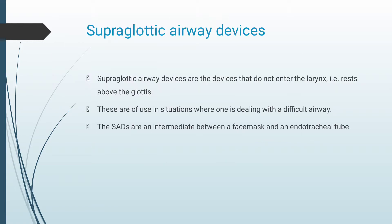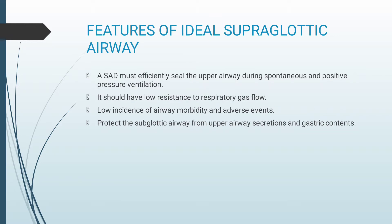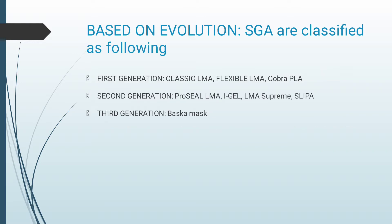Moving on to supraglottic airway devices. Supraglottic airway devices are devices that do not enter the larynx — that is, they rest above the glottis. These are of use in situations where one is dealing with a difficult airway. Supraglottic airway devices are an intermediate between a face mask and an endotracheal tube. A supraglottic airway device must efficiently seal the upper airway during spontaneous and positive pressure ventilation, have low resistance to respiratory gas flow, and a low incidence of airway morbidity. Based on evolution, these have been classified as 1st, 2nd, and 3rd generation.